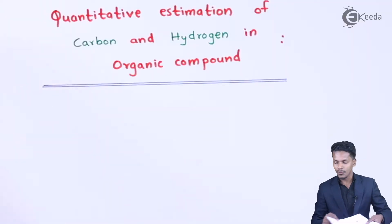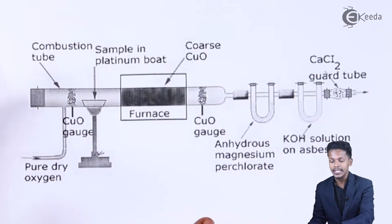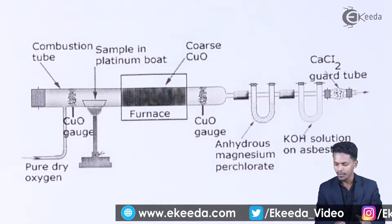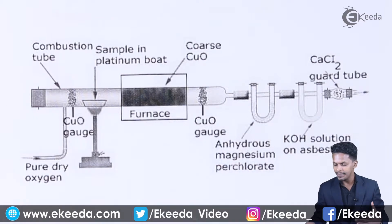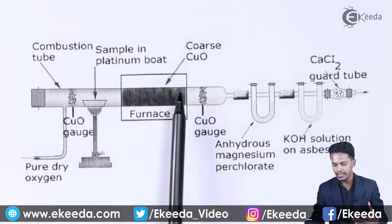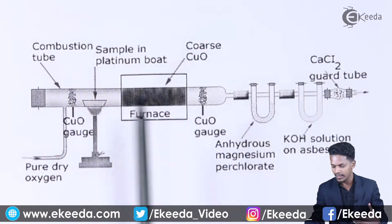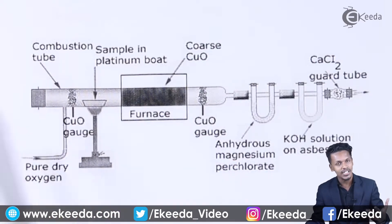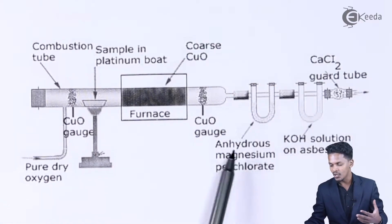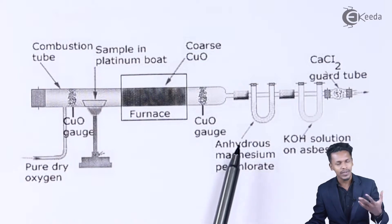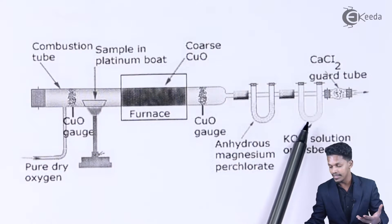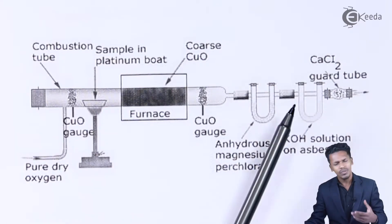Here is an apparatus from which we can determine the percentage of carbon and hydrogen present in the organic compound. This apparatus consists of a furnace, and the whole apparatus is sealed from one side. It also consists of tubes containing anhydrous magnesium perchlorate, or we can use anhydrous calcium chloride. Along with that, there is a KOH solution already prepared here.